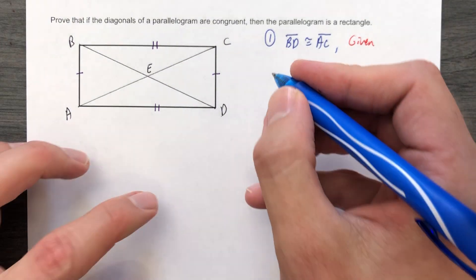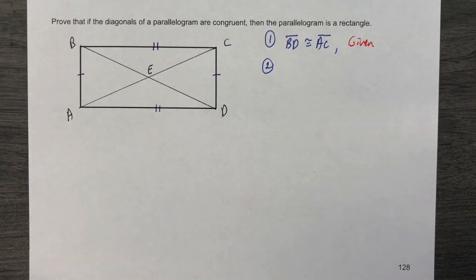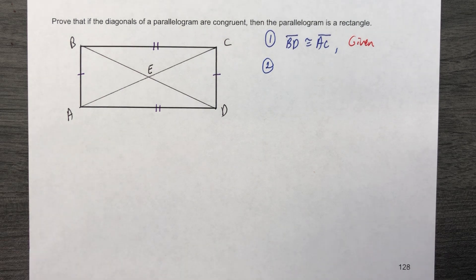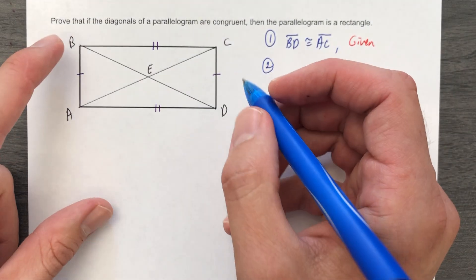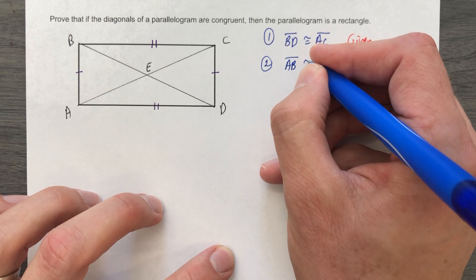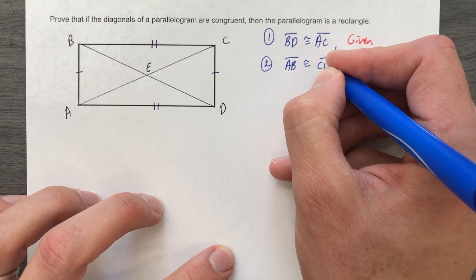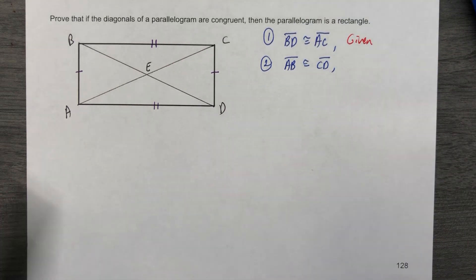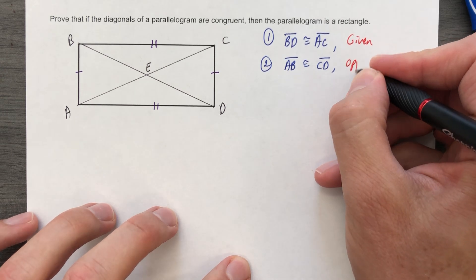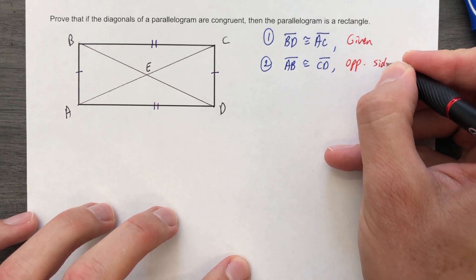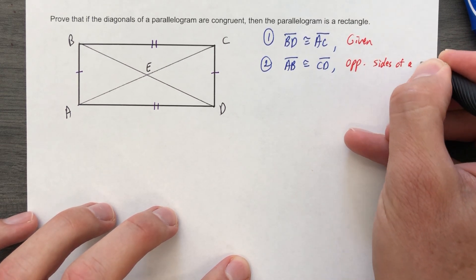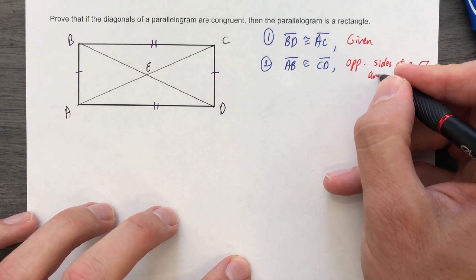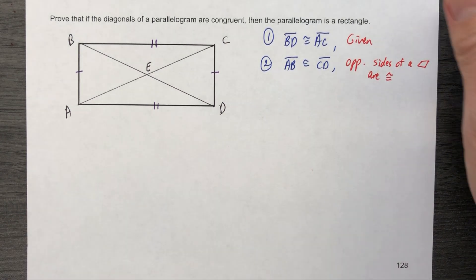Number two. We need another pair of sides that are congruent. So AB and CD. We can say that AB is congruent to CD. And we know that because opposite sides of a parallelogram are congruent.